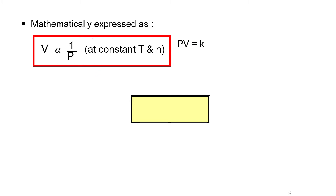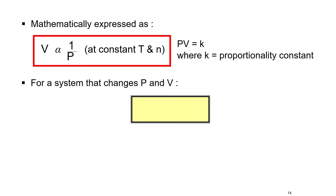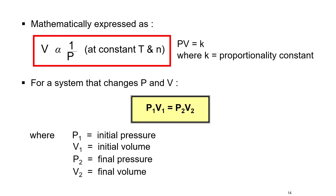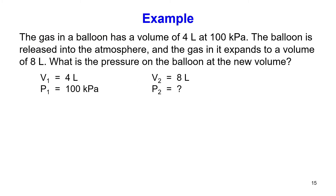For a system where P and V change, P₁V₁ = P₂V₂, where P₁ is initial pressure, V₁ is initial volume, P₂ is final pressure, and V₂ is final volume. Let us look at an example.